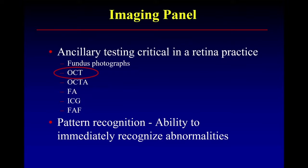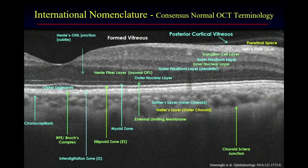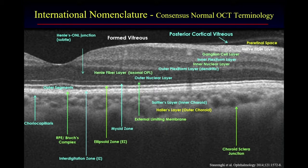For those of us who don't have AI or machine learning, we're dependent on pattern recognition, which is the ability to immediately recognize abnormalities. And of course, in order to recognize abnormalities, you have to know what normal is. I highly recommend this paper by Sterengian and colleagues, which is the international nomenclature for normal OCT.